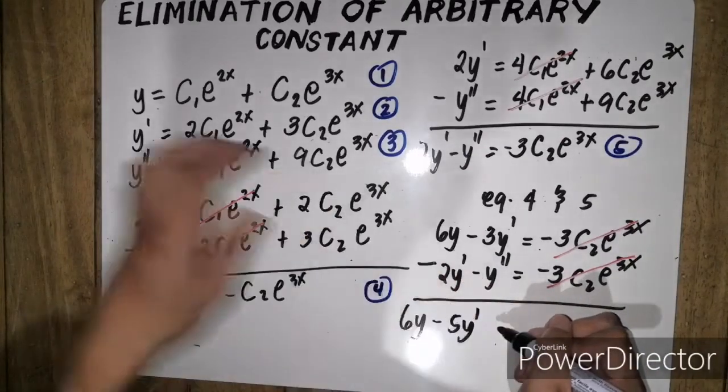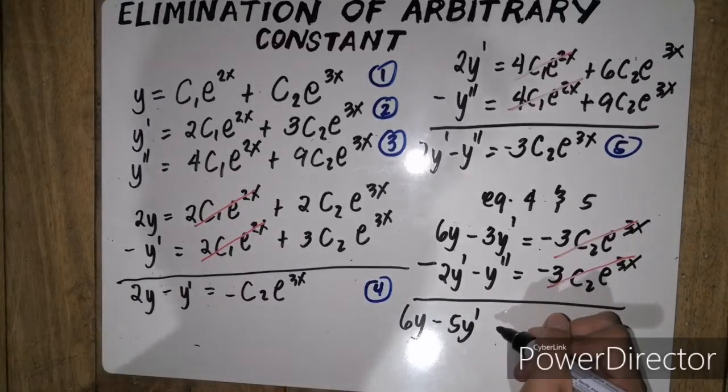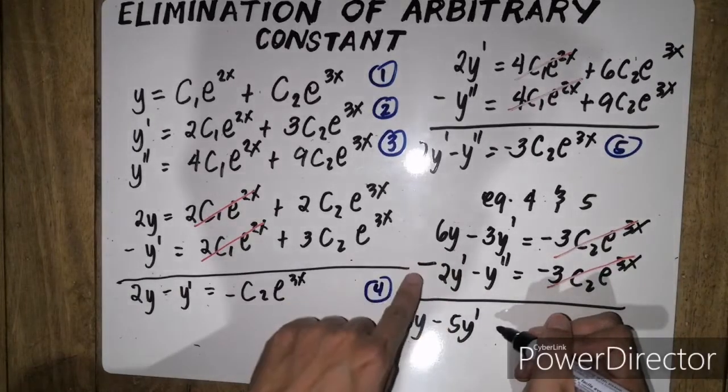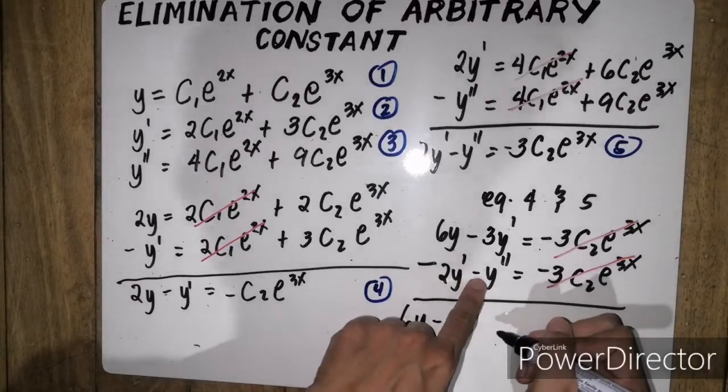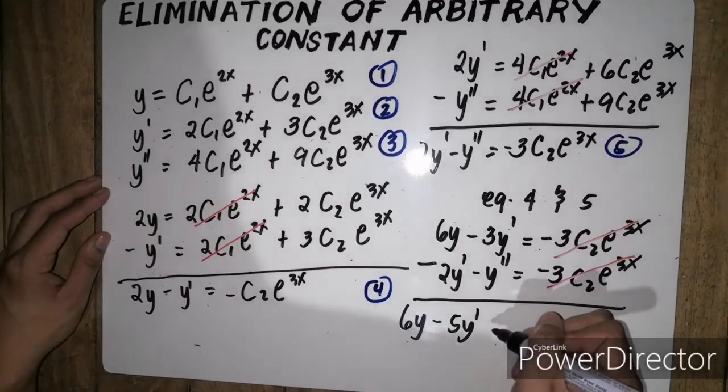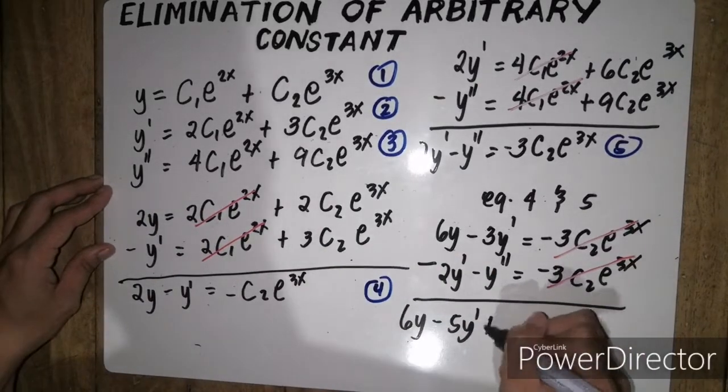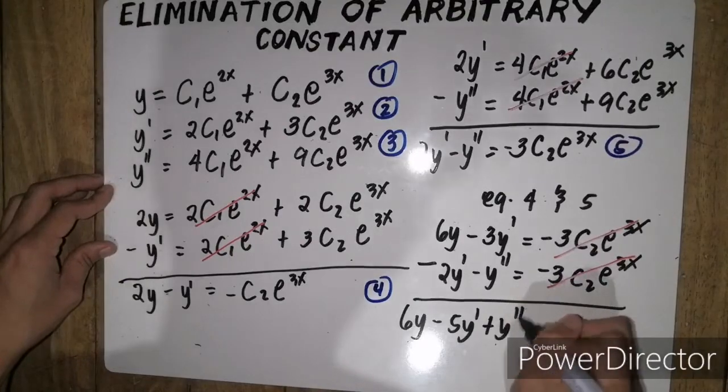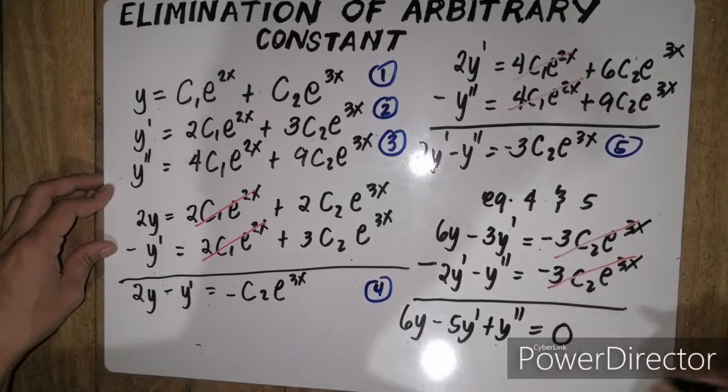Si double prime, isa lang siya. So, that's simply negative, tapos negative. So, it will become positive y double prime, which is equal to 0.